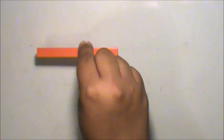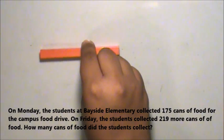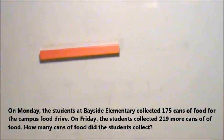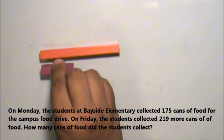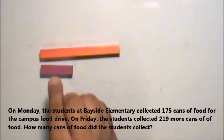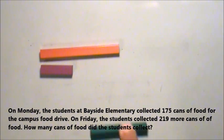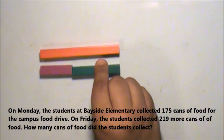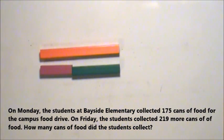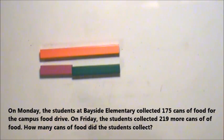This orange Cuisenaire rod represents the whole. Here are 175 cans of food represented by the purple rod. Here are 219 cans of food represented by the green rod. As you can see, the green rod is bigger than the purple rod because 219 is greater than 175.